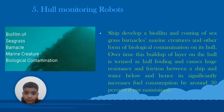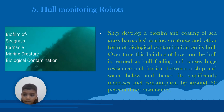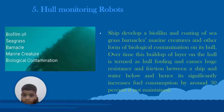Hull Monitoring Robots: The ship develops a biofilm and coating of seagrass, barnacles, marine creatures, and other biological contamination on its hull. Over time, this buildup of layers on the hull, termed hull fouling, causes huge resistance and friction between a ship and the water, significantly increasing fuel consumption by around 30% if not maintained.